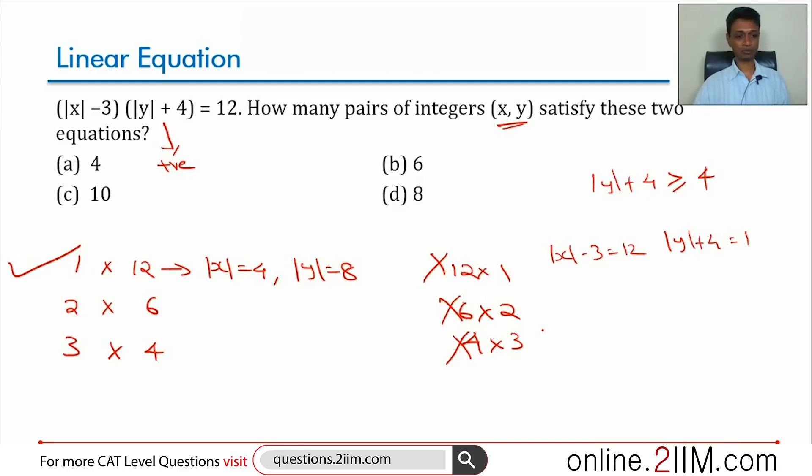We're dealing with only 1 into 12, 2 into 6, 3 into 4. To do 2 into 6: |x - 3| is 2, or |x| is 5. |y + 4| is 6, or |y| is equal to 2.